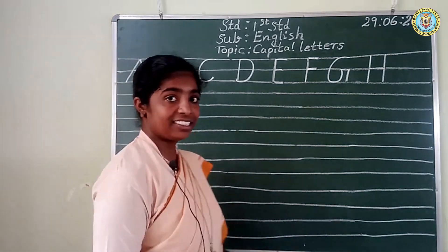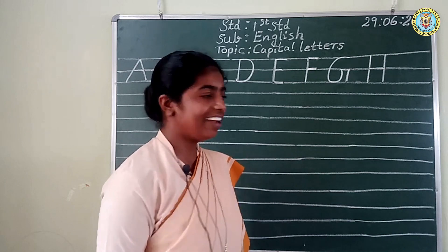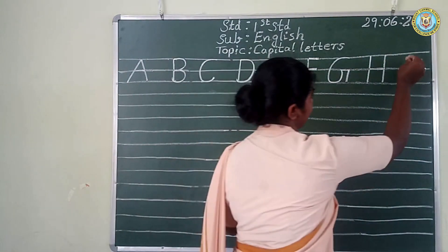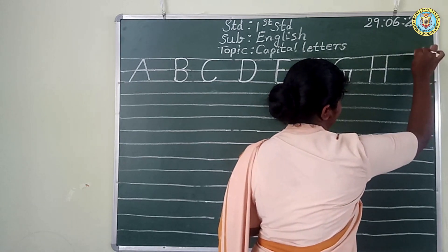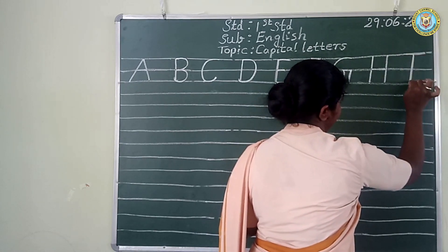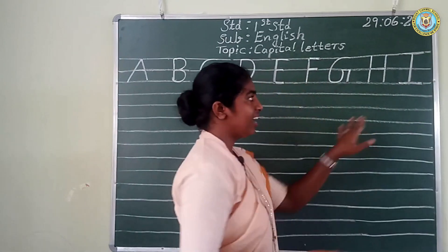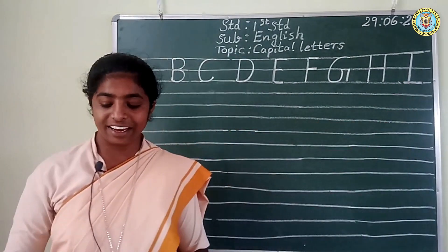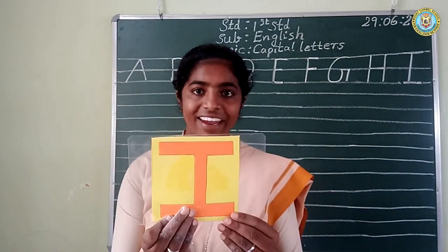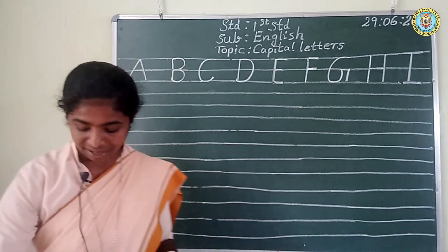Which is the next letter, children? Yes, you are right. It is I. We shall write I now. The sleeping line, and the straight line, one more sleeping line. Yes, it is I. I. I for igloo. I for igloo.